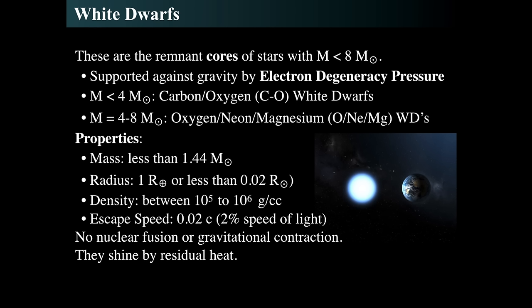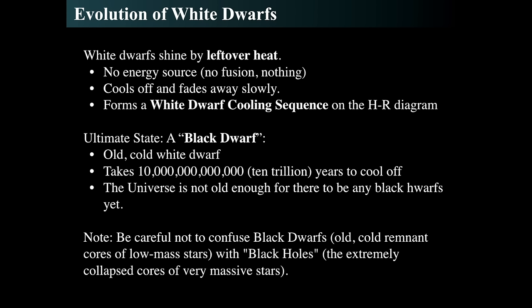The electrons comprise a lattice-like structure that keeps everything up and are effectively at temperature zero in their degenerate state. What remains are the nuclei of the remnant elements. As a white dwarf evolves it will cool — since it has no energy source, no fusion or anything, it cools off and fades away. There's a white dwarf cooling sequence in the HR diagram where it starts in the hot upper left and goes to the cooler lower right.